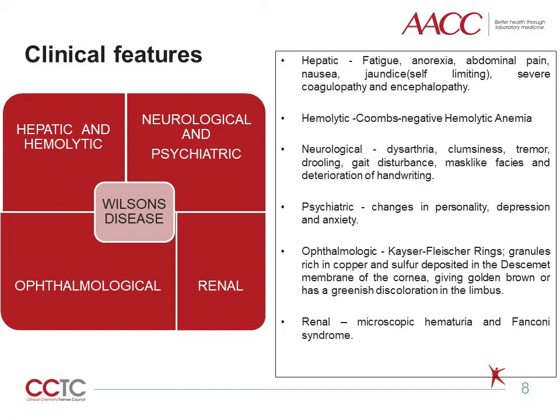A Coombs-negative hemolytic anemia results from direct toxic effects of copper on red cell membranes. Copper gets deposited in the brain, primarily in the basal ganglia, which results in symptoms of Parkinsonism like dysarthria, clumsiness, tremor, drooling, gait disturbances, mask-like facies and deterioration of writing. Sometimes psychiatric symptoms like changes in personality, depression and anxiety can be observed. The ophthalmologic symptoms show the presence of copper and sulfur-rich granules in the Descemet membrane of cornea, giving it a golden brown ring or a greenish discoloration in the limbus known as the Kayser-Fleischer ring under slit lamp.